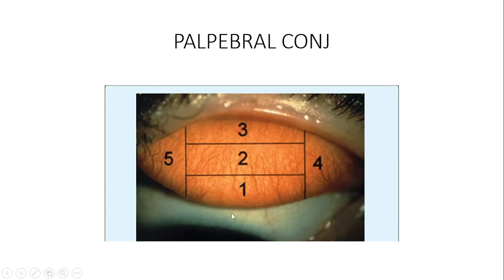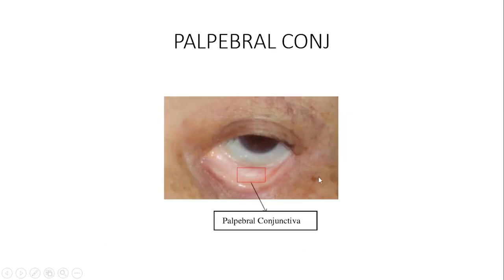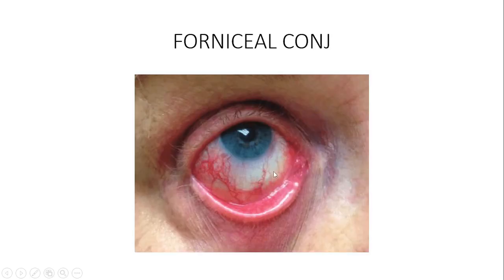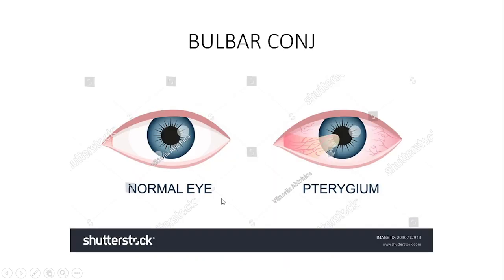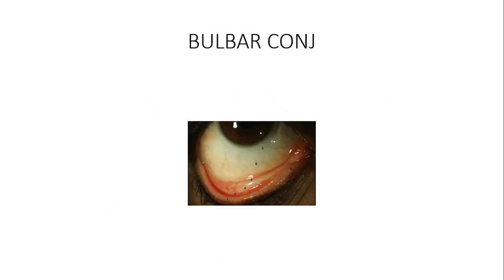There is also conjunctiva here — this is called the bulbar conjunctiva — and that area is the limbus, followed by the cornea. So this part is conjunctiva, that part is conjunctiva, and the inner area where there is an indentation — that is also conjunctiva.